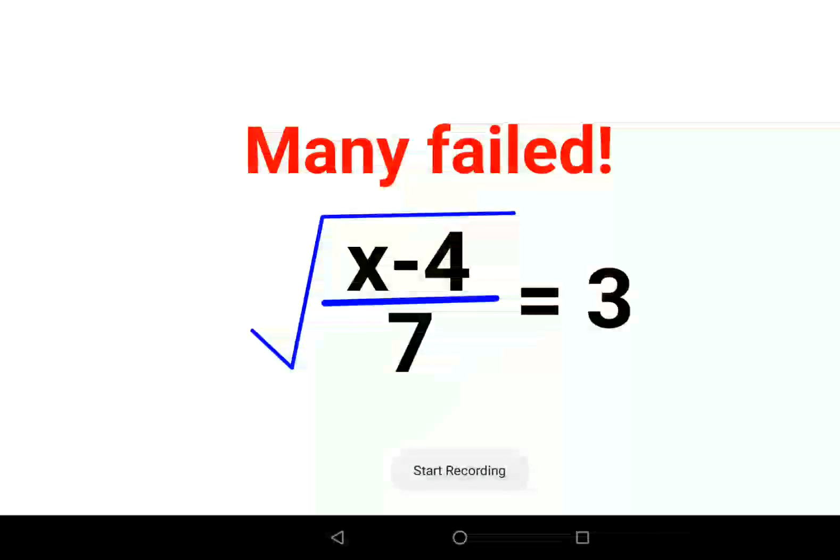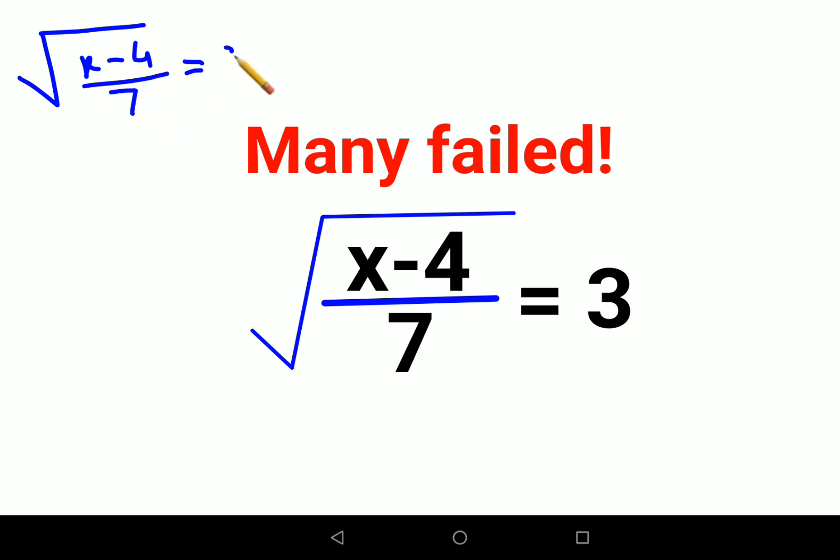Welcome everyone. Yes, a lot of people did not know how to do this. Okay, so here when you have a root: √((x-4)/7) = 3, the very first step is to put squares on both sides.